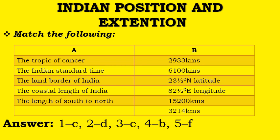The length from south to north is 3,214 km — that is option F. The remaining option 2,933 km is the length from east to west, though it is not given in the matching options here.